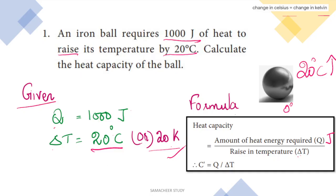Now these two values are given. We will see the formula for heat capacity of the ball. The formula is: heat capacity equals the amount of heat energy required divided by the rise in temperature, that is Q divided by delta T.